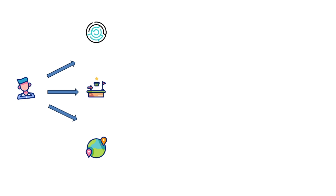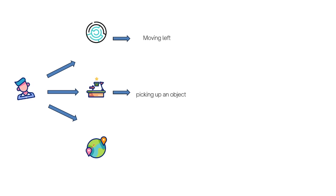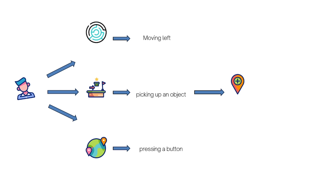Alright, picture this. You're an agent, and you're in some kind of environment — maybe it's a maze, maybe it's a video game, or maybe it's the real world. At every step, you take an action, like moving left, picking up an object, or pressing a button. When you do, the environment responds and changes in some way. Maybe you move to a new location, and it gives you feedback in the form of a reward.